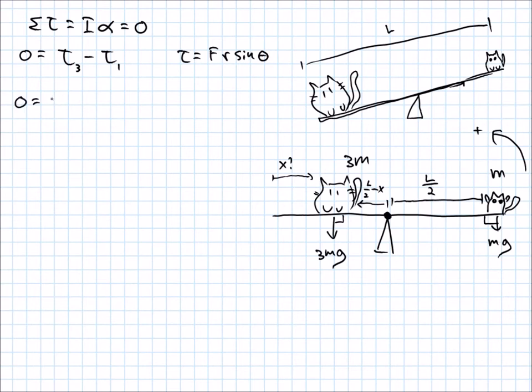So torque 3 is going to be the force, which is 3mg, times the distance, which is L over 2 minus x, times the sine of the angle between them, which is 90 degrees. That's going to be minus the torque due to the little guy, which is mg times his distance to the pivot point times the sine of the angle between the distance to the pivot point and the force, which is 90 as I mentioned. Now the sine of 90 is 1.